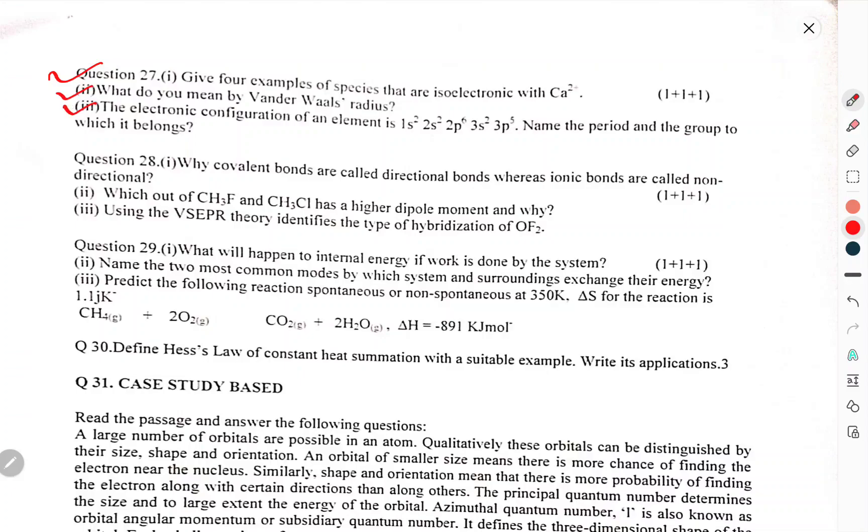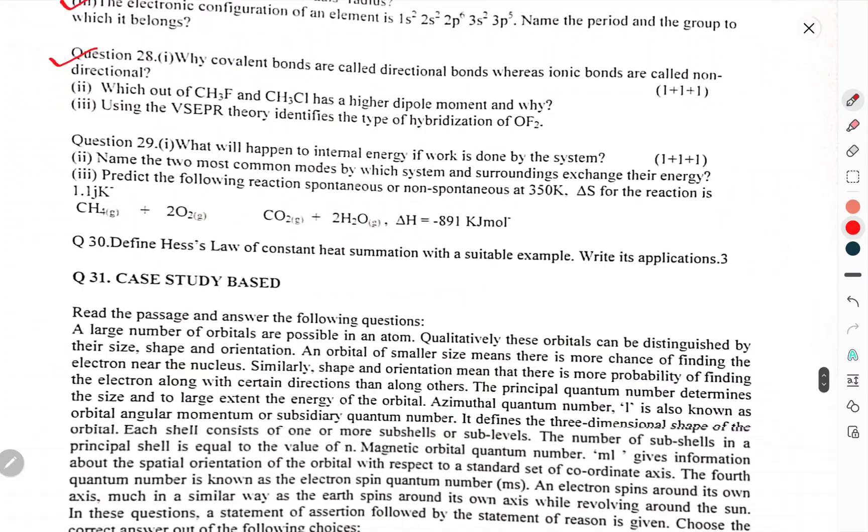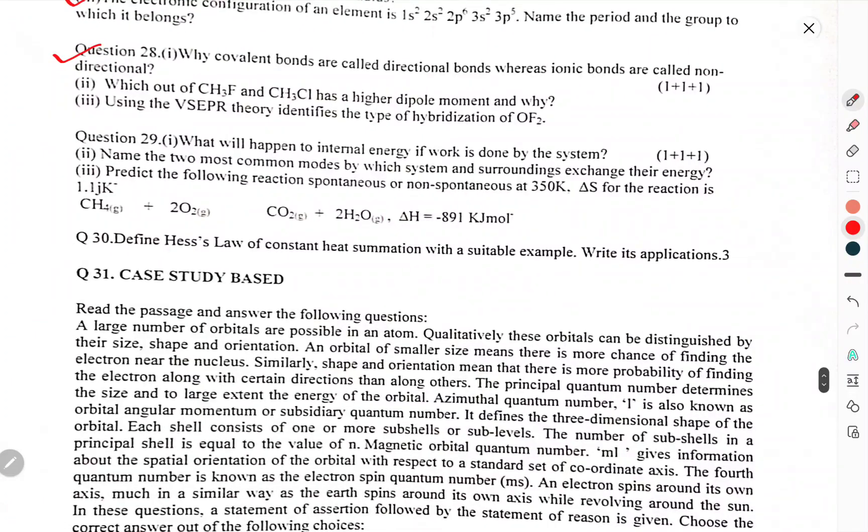What do you mean by the Van der Waals radius? An element with electronic configuration 1s2, 2s2, 2p6, 3s2, 3p5 - name the period and group to which it belongs. Why are covalent bonds called directional bonds whereas ionic bonds are called non-directional? Which of CS3F and CS3Cl has higher dipole moment and why? Using VSEPR theory, identify the type of hybridization of ClF2.